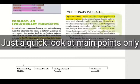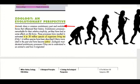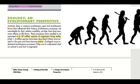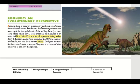Regarding zoology and the evolutionary perspective, every animal has a common evolutionary past and evolutionary forces that influence their history. In simple terms, animals are derived from a common ancestor, linking different species together. The total number of organisms or species living today is estimated at four to thirty million, and some have gone extinct, like dinosaurs.